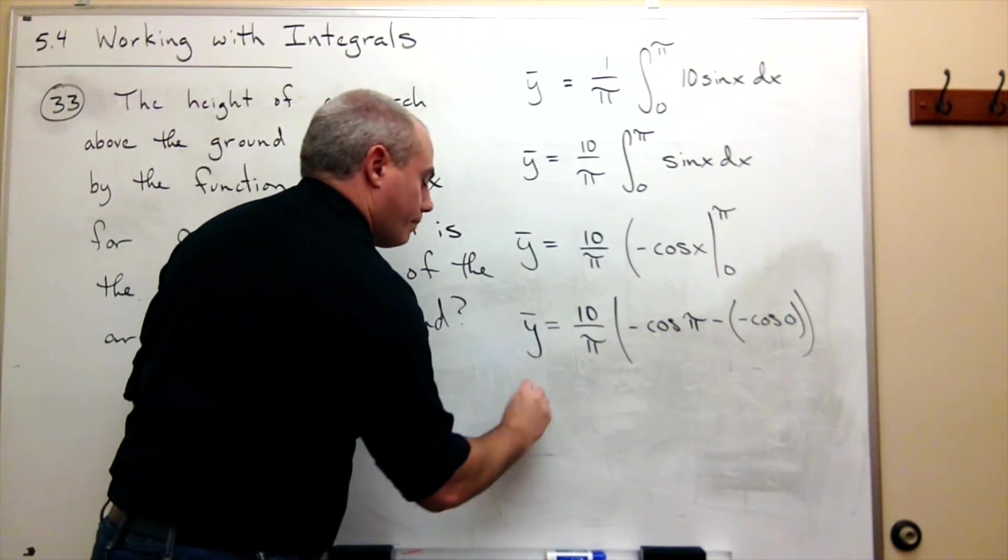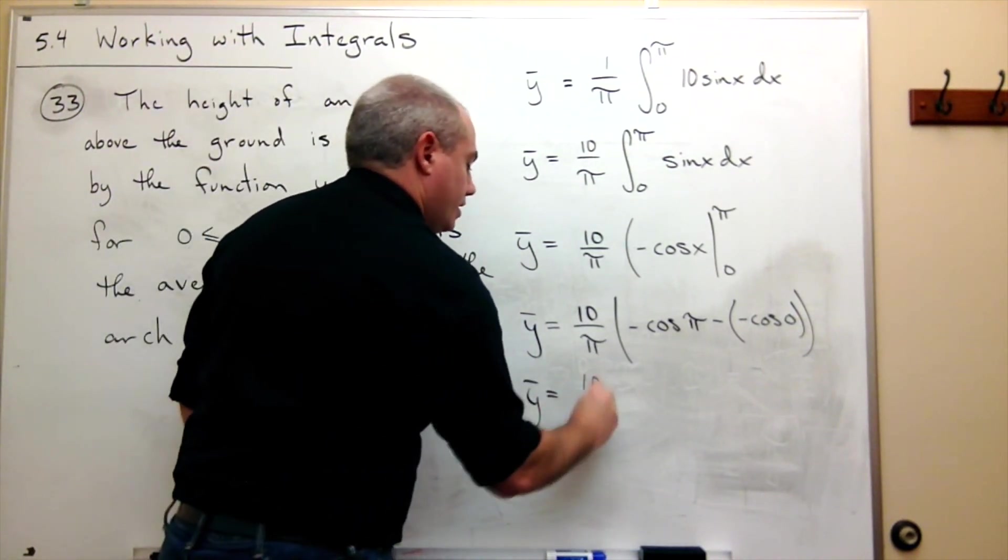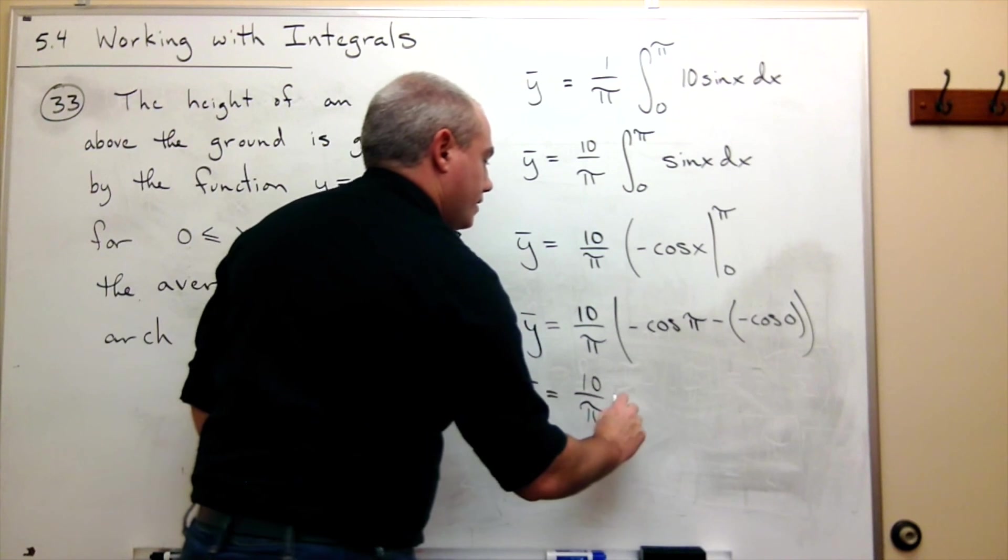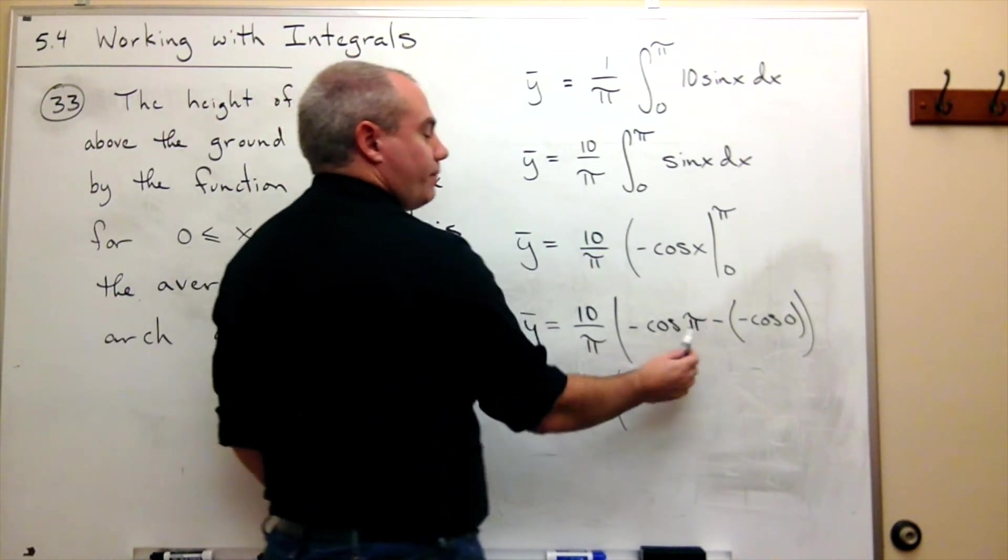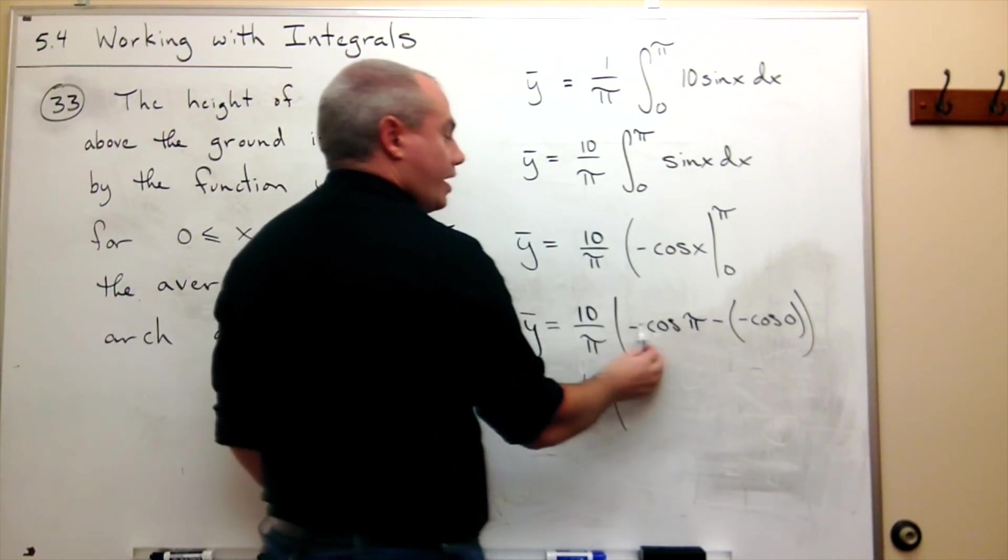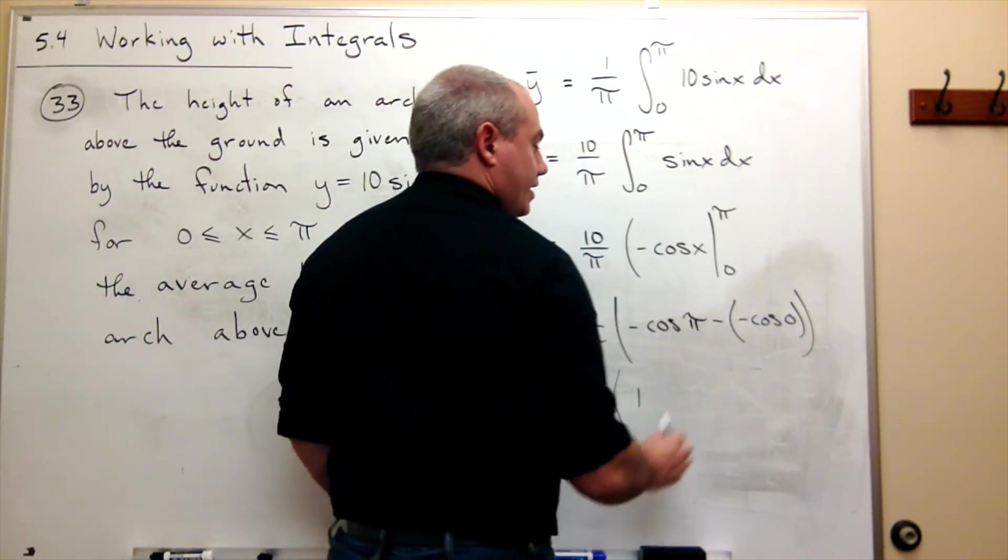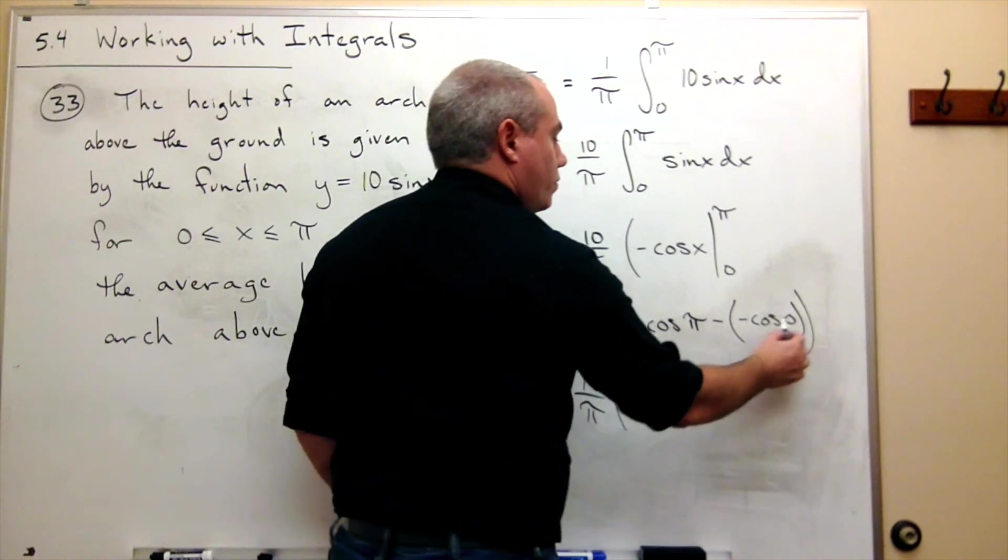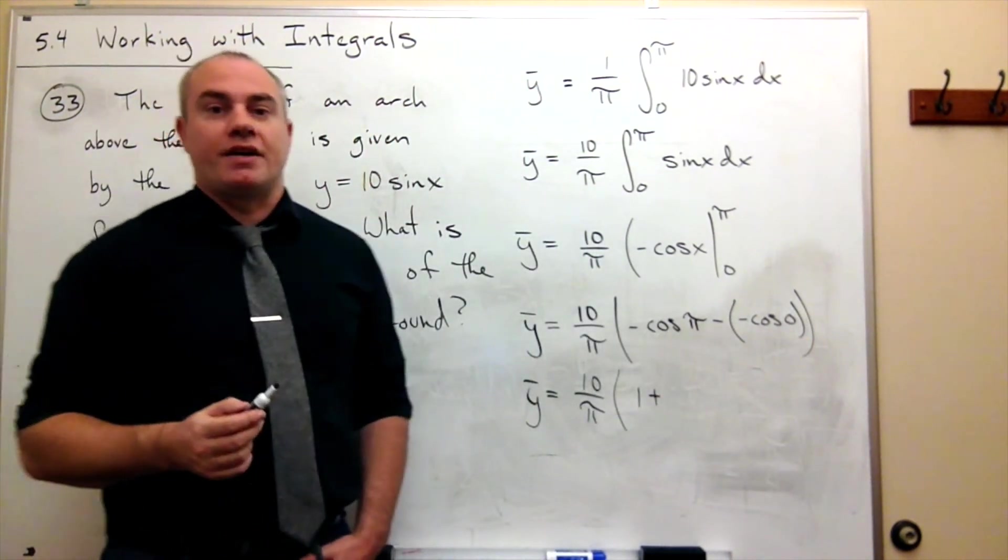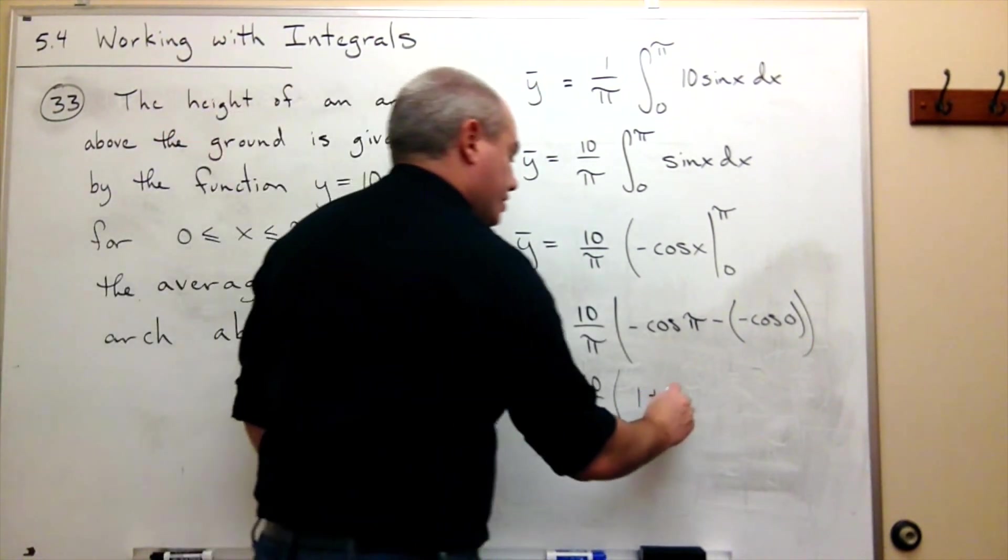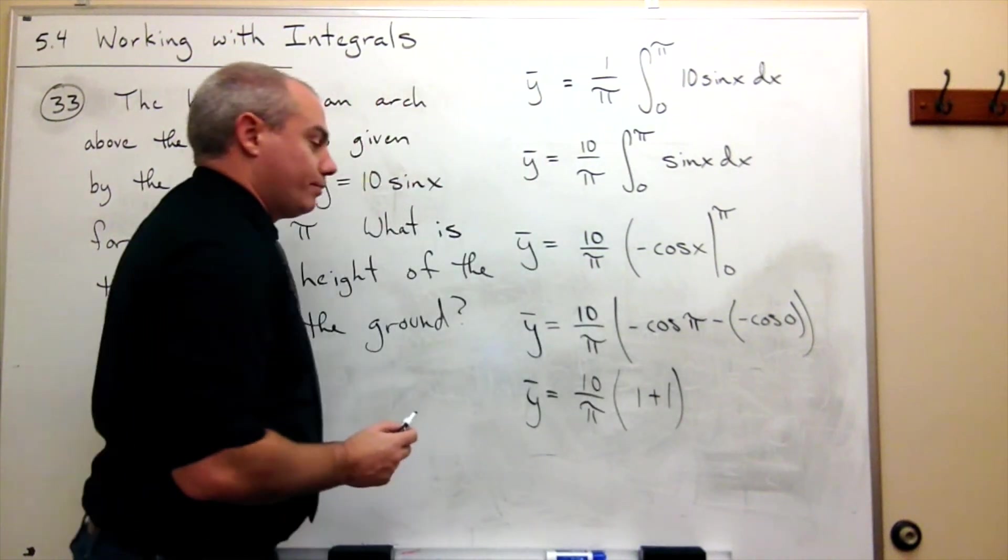So y bar equals 10 over pi times negative cosine of pi. Cosine of pi is negative 1, so negative negative 1 is 1. And then I get minus minus minus, which is plus cosine of 0. Cosine of 0 is 1, so we get 1 plus 1.